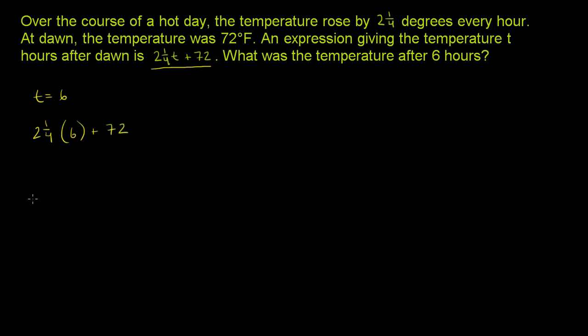Now, order of operations, you want to do multiplication before you do addition. So we want to multiply the 2¼ times the 6 first. And the easier way to do that is to turn this mixed number into an improper fraction.